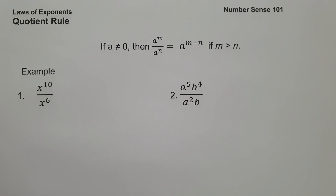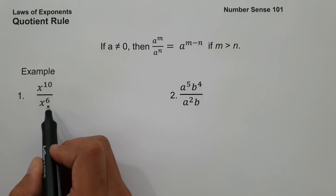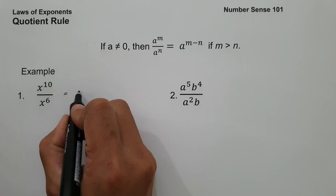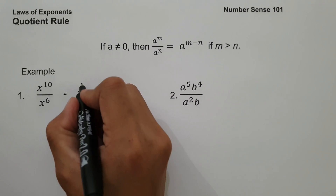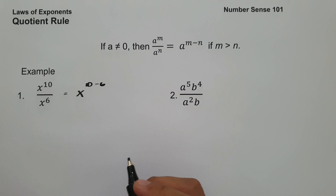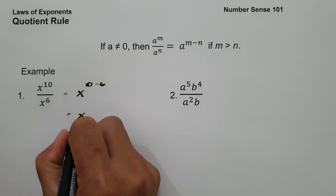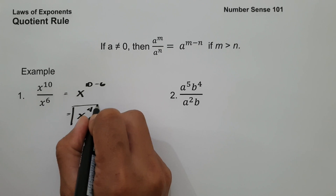On example number one, we have x raised to 10 divided by x raised to 6. As you can see, we have the same base. All you have to do is copy the base and subtract their exponents, that is 10 minus 6. To simplify, this will be x raised to 10 minus 6, that is 4. And this will be our answer.